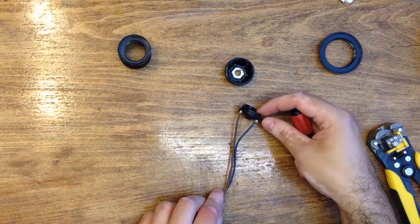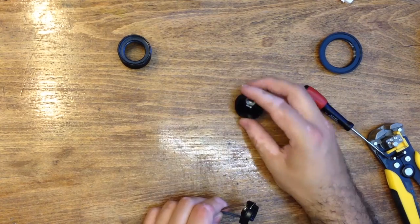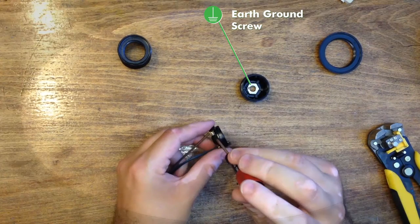If you have a 3 wire cable with a ground wire, you would connect it to the screw located at the base of the socket.